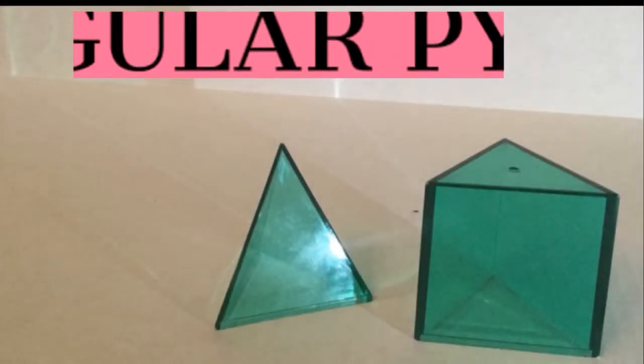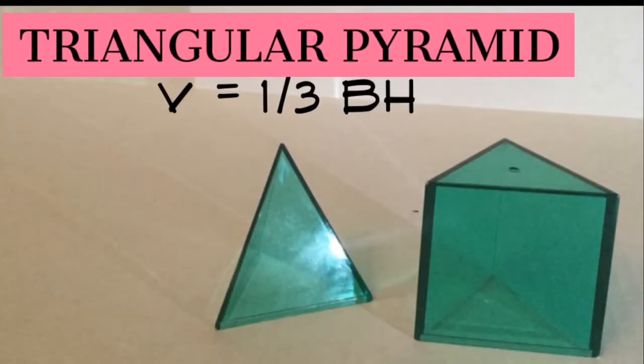On that third pour, perfect fit. So the pyramid formula stays the same. Volume equals one third big B times H.